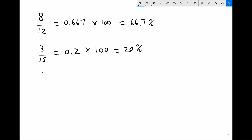If we have the fraction 4 over 1000 and want to convert it to a percentage, we do 4 divided by 1000, which gives us 0.004. The next step is to multiply by 100 to get a percentage, giving us 0.4%.